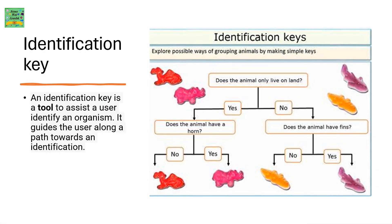An identification key is a tool to assist a user in identifying an organism. It guides the user along a path towards an identification, helping us identify a given organism by asking simple questions.